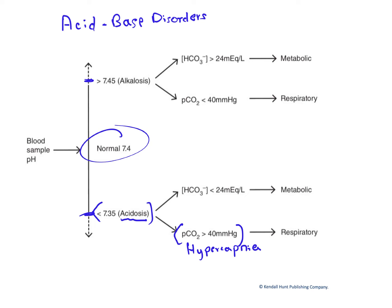We should pause for a moment and make sure we understand why hypercapnia causes the blood pH to fall. Well, it's the carbonic acid equation. If we have an excess of CO2 in the blood, that CO2 is going to become hydrated to a certain extent, producing carbonic acid, which will dissociate into protons and bicarbonate. So as a result, the blood pH is going to fall. This kind of acidosis resulting from hypercapnia is called respiratory acidosis.